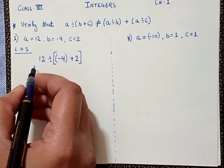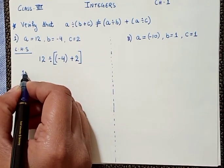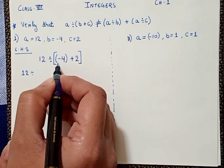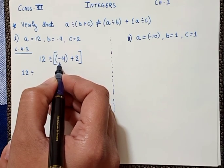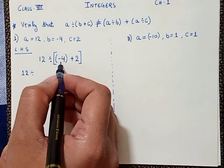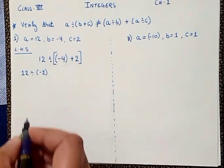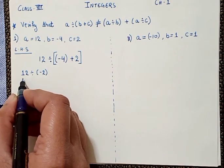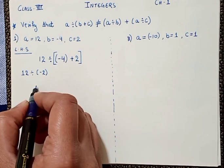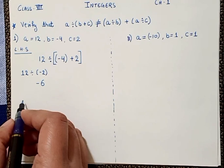When these two functions solve, first we'll solve this: 12 divided by... we'll add these two numbers. The first one has a negative sign and the other has a positive sign, so we'll take the difference of both. We'll have minus 2 as an answer. Now solving further, 12 divided by minus 2 gives us minus 6. So that is the value of LHS.